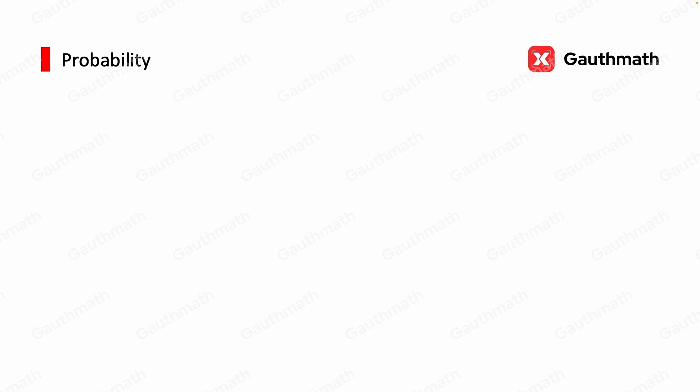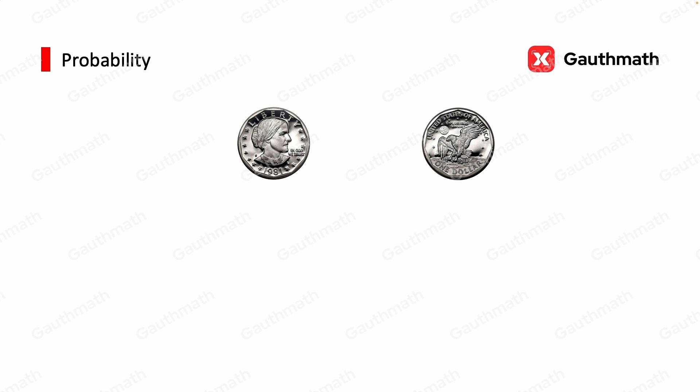The reason we need probability is because sometimes an event has more than one outcome. For example, when we toss a coin, the coin could show a head for the first toss, and when we toss the coin again, it could show a tail for the second toss. To describe the pattern of a coin toss, we can adopt the concept of probability.